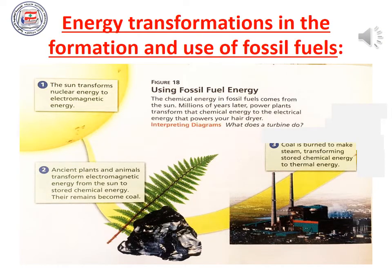Now let's talk about energy transformations in the formation and use of fossil fuels. This is very important and contains several steps, so please concentrate. The first step is in the sun — the sun transforms nuclear energy to electromagnetic energy. Nuclear reactions in the sun transform nuclear energy into light energy, which is also called electromagnetic energy because light waves are electromagnetic waves. In the second step, ancient plants and animals transform this electromagnetic energy from the sun into stored chemical energy, and their remains become coal.